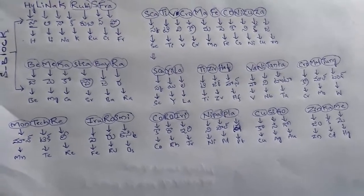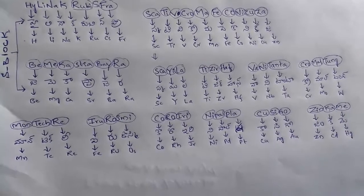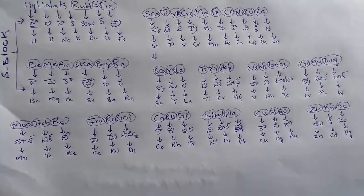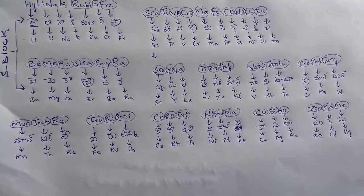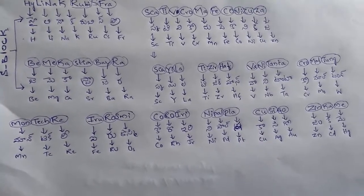Next, Titanium group, d-block. T zero Hf. Once again, T zero Hf. T means titanium, Zero means zirconium, Hf means hafnium.